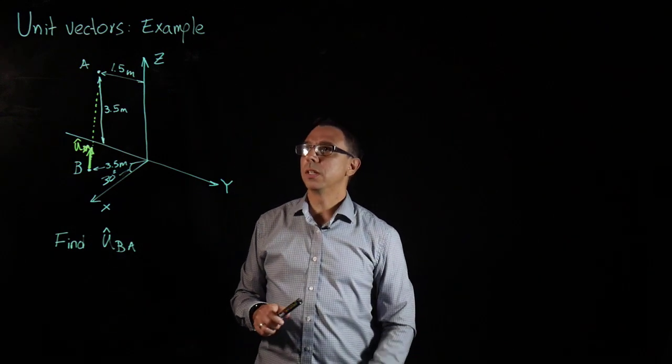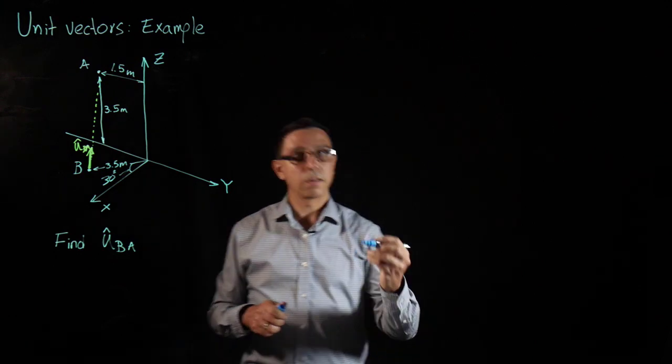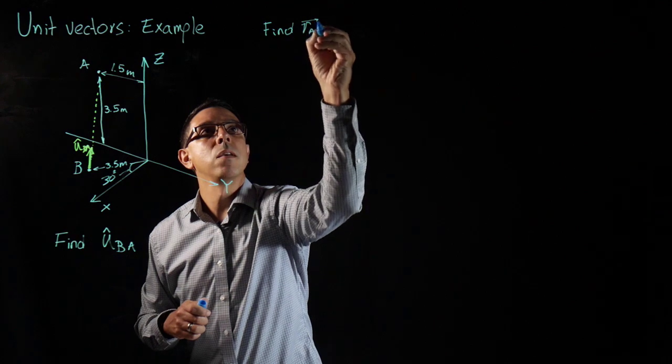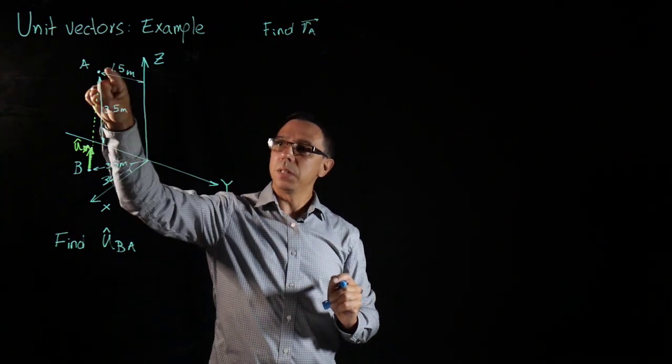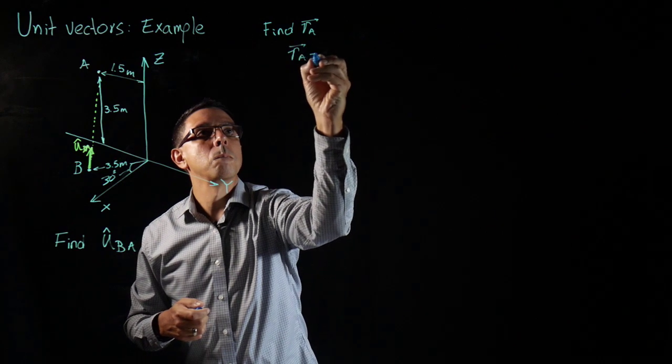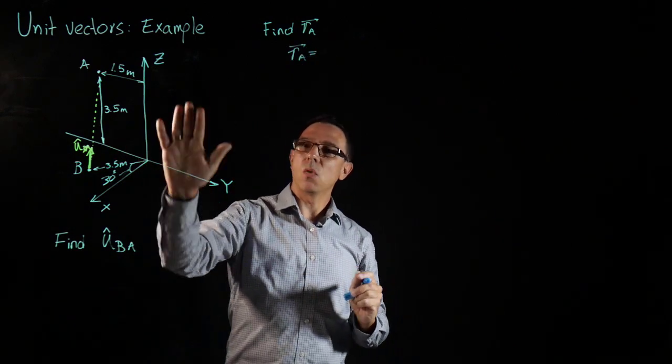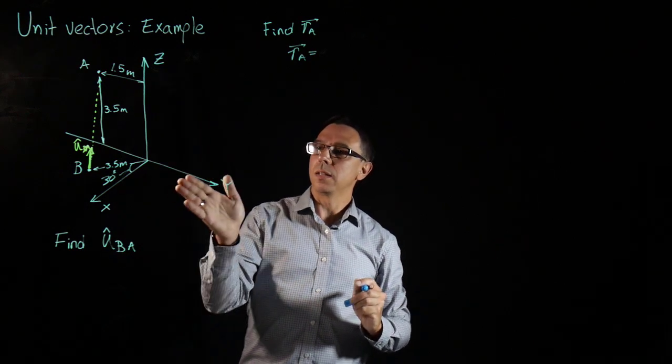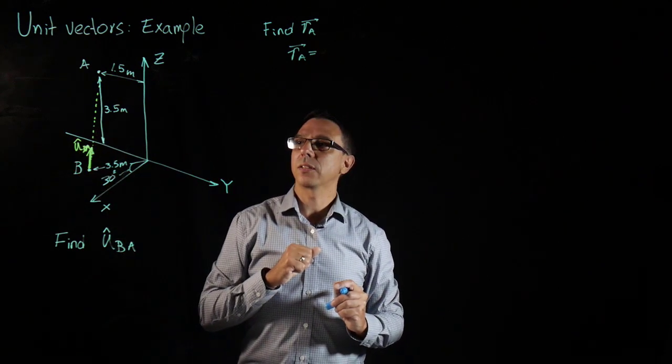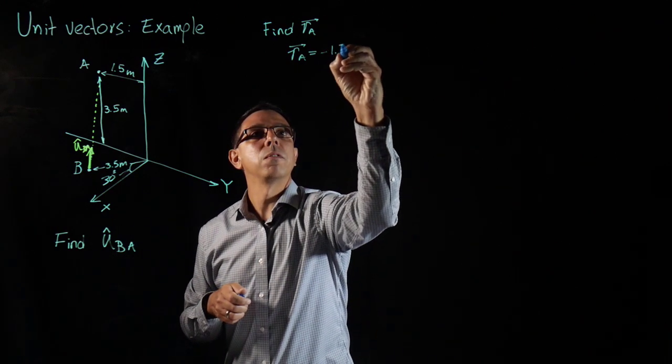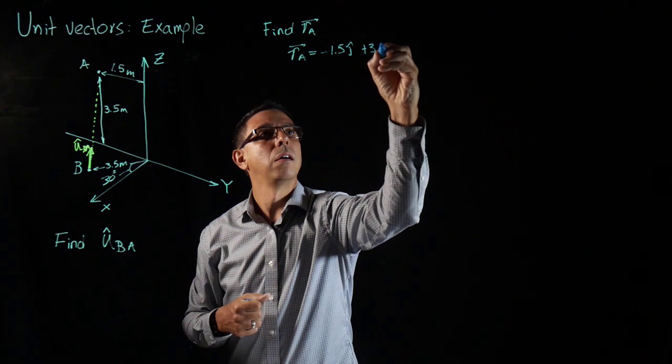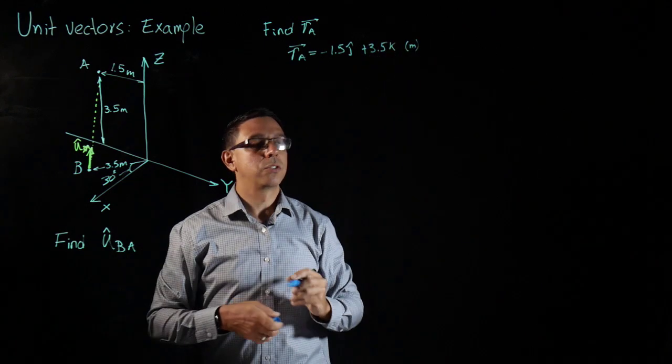So the first thing I want to do is to find that position vector R_A. And as we've done before, that position vector R_A can be expressed with respect to these distances. So R_A, there's nothing in the X direction, right? It's in the Y, Z plane. So it will be 0*i. It is in the negative direction corresponding to the Y axis. So it will be minus 1.5*j and 3.5*k meters. Very good.